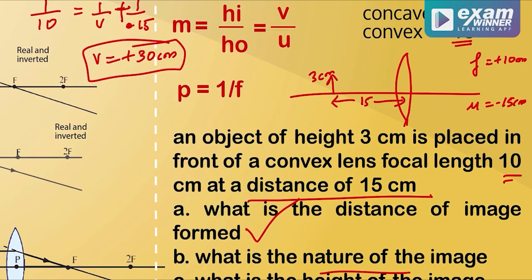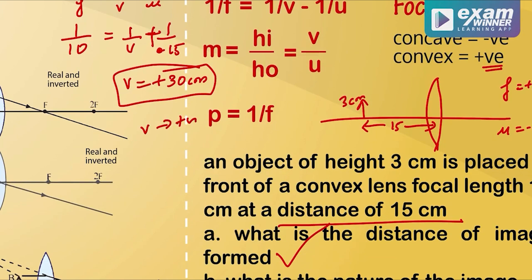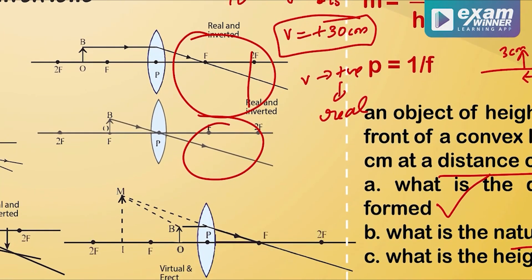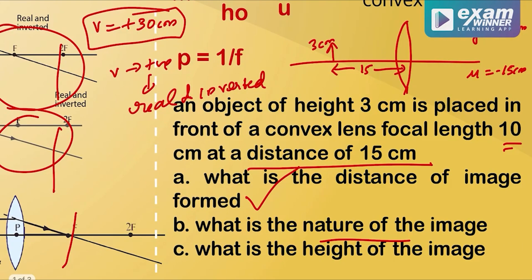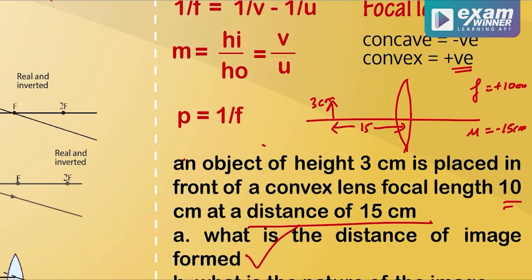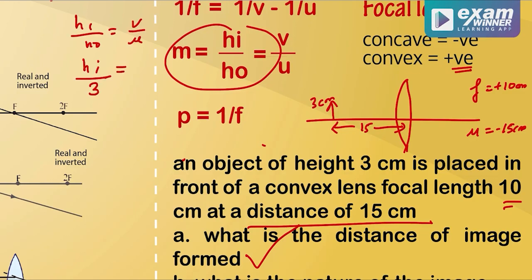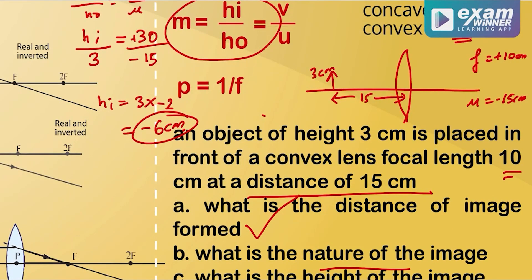Second, what is the nature of the image? Since v is positive, the image is real. The magnification m equals v by u equals 30 by minus 15, which equals minus 2. The image height hi equals 3 into 30 by minus 15, giving hi equals minus 6 centimeters. The negative sign means the image is inverted.